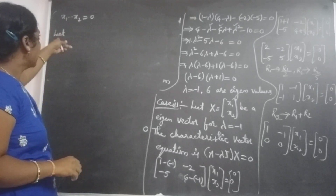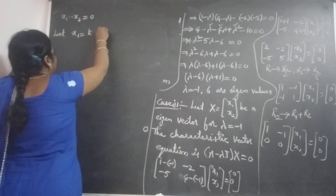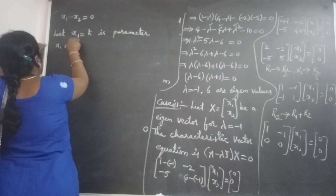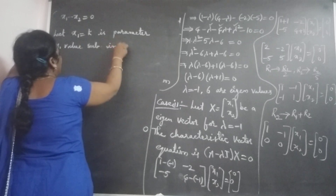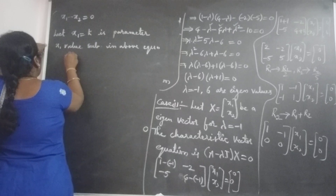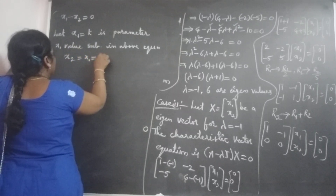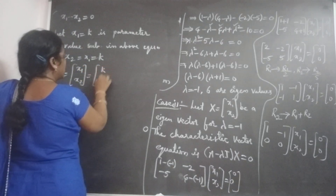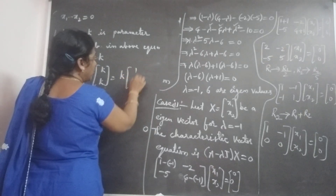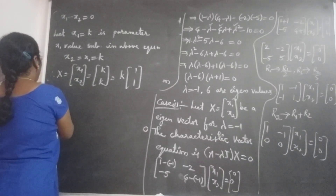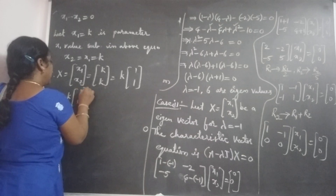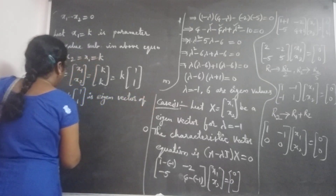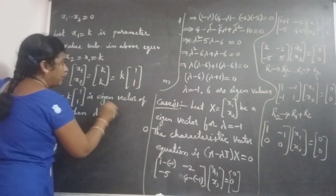From this equation, we take any one variable as a parameter. Let x2 equal k be the parameter. Substituting, x1 equals x2, which is also k. Therefore the eigenvector capital X equals [x1; x2] equals [k; k] equals k times [1; 1]. So x equals k times [1; 1] is the eigenvector corresponding to lambda equal to minus 1.